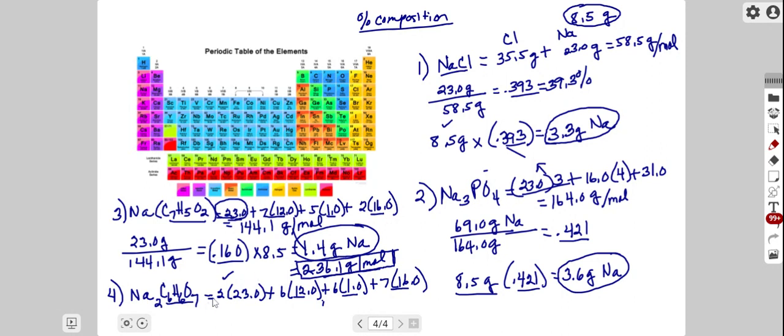From the formula, two sodiums are present, so two times 23 equals 46 grams out of the 236.1 total grams will be sodium. Figuring that out as a fraction, we get 0.195. Multiplying that by our eight and a half gram sample size...